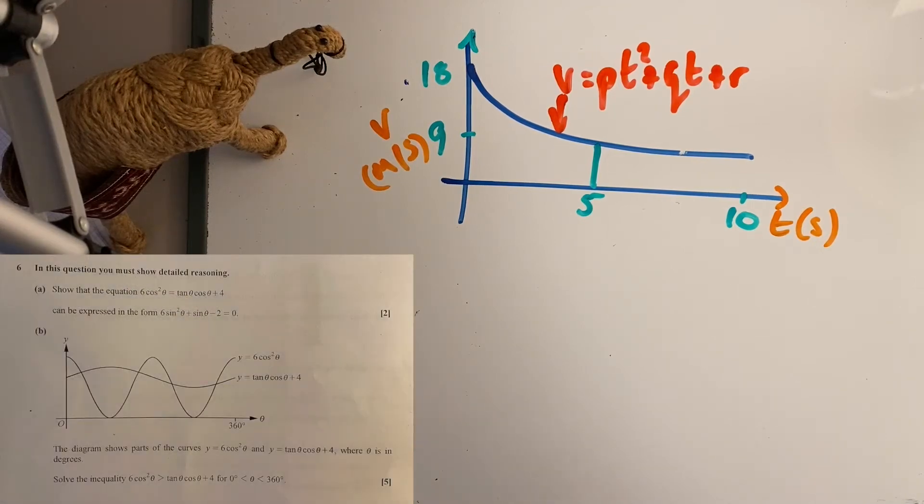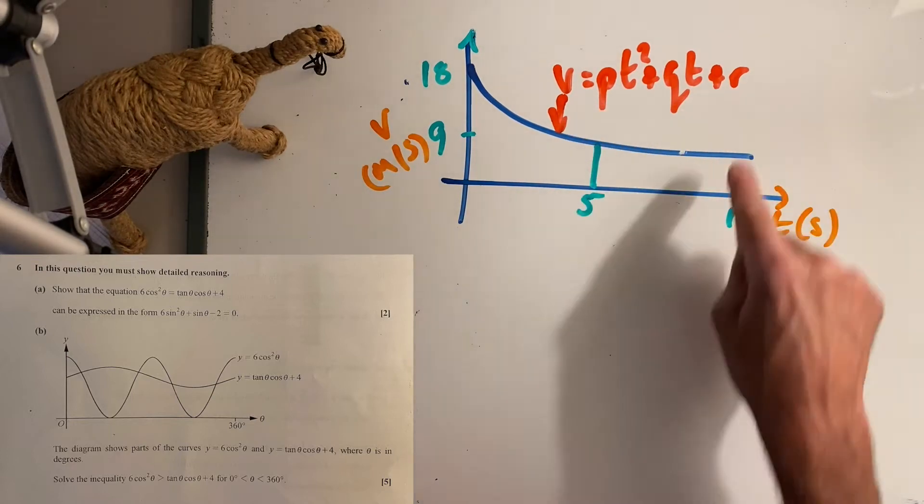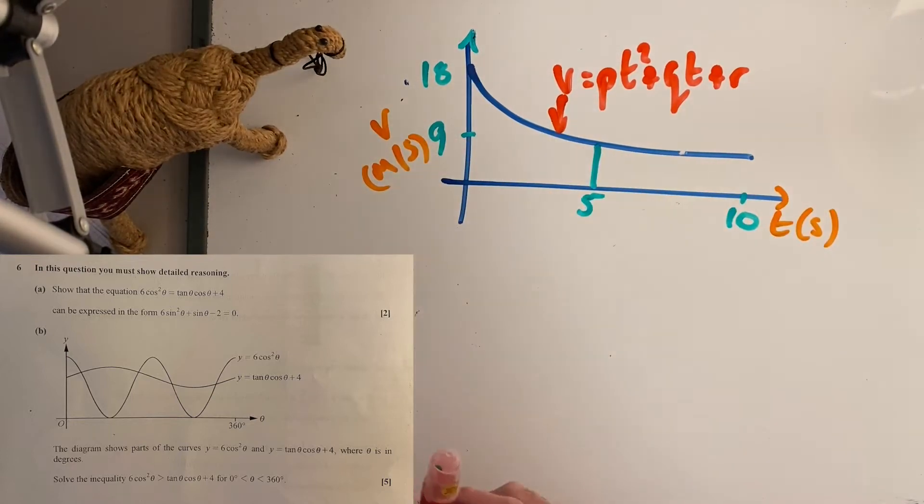So here's the question. It asks us to determine the values of p, q, and r. We can see that after five seconds, the acceleration is zero and the speed of the cart remains constant. We've got two sections here and we need to find these values. Straight away I know that r is going to be 18, so I can say that when t is zero, r is 18.